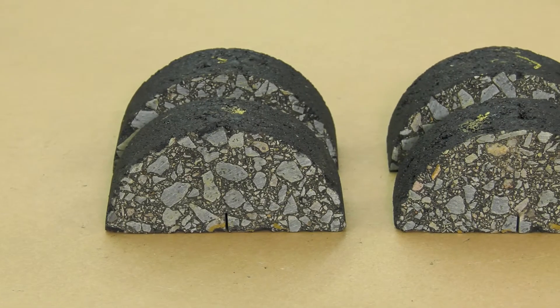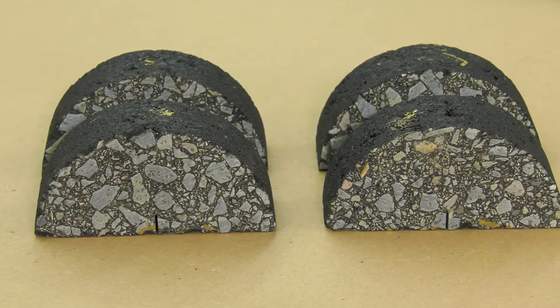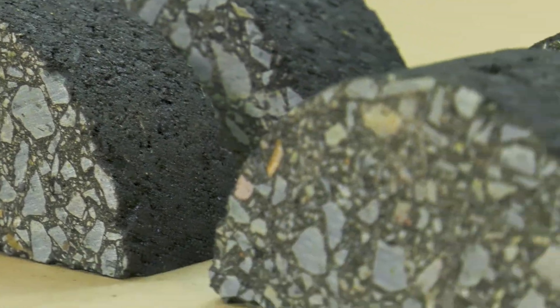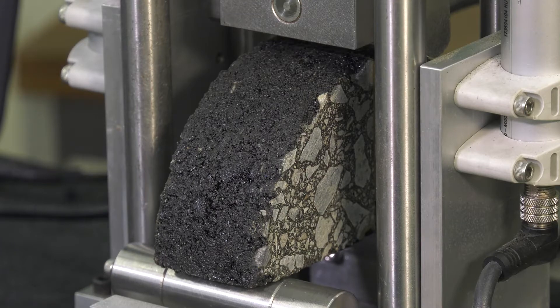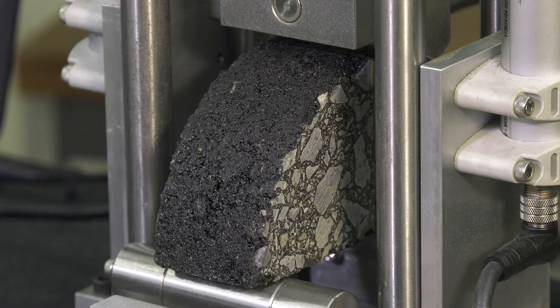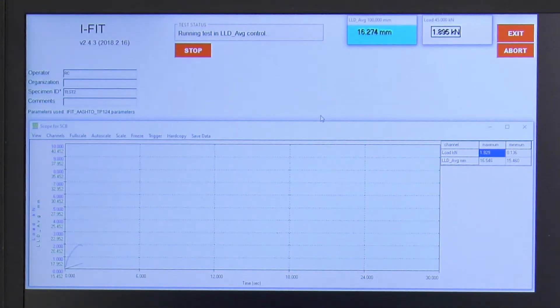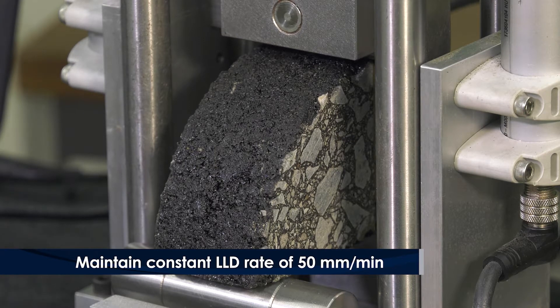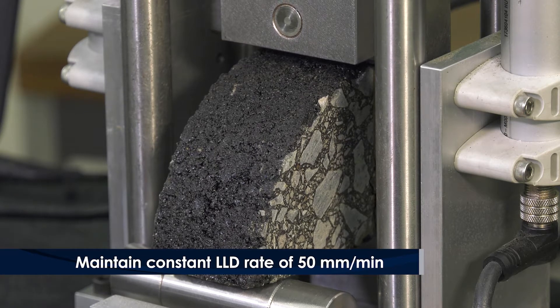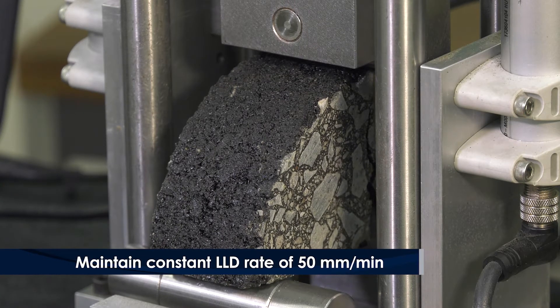The IFIT uses a semicircular bend, or SCB, test specimen, which is a half disc with a notch cut parallel to the loading and vertical axis. Load is applied along the SCB specimen's vertical radius and the load and load line displacement, or LLD, are measured throughout the test. The load is applied to maintain a constant LLD rate of 50 millimeters per minute for the duration of the test.